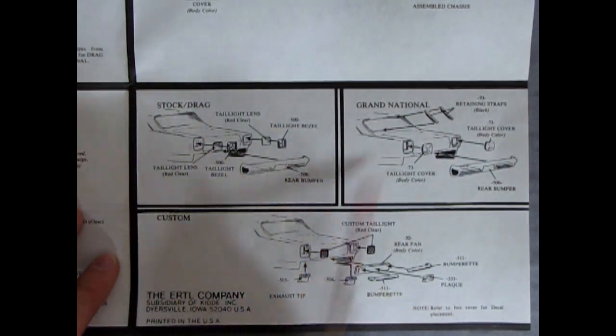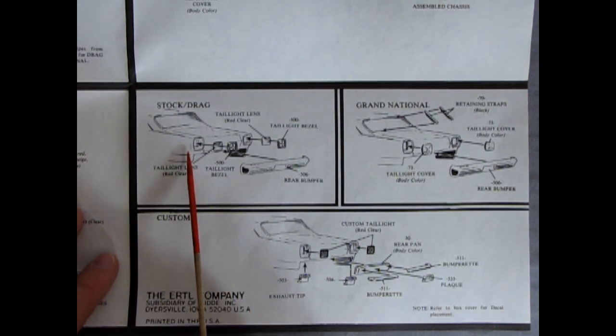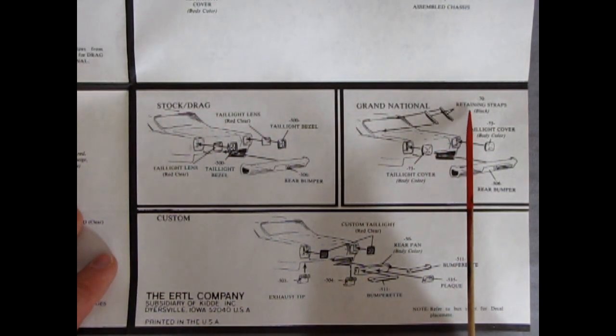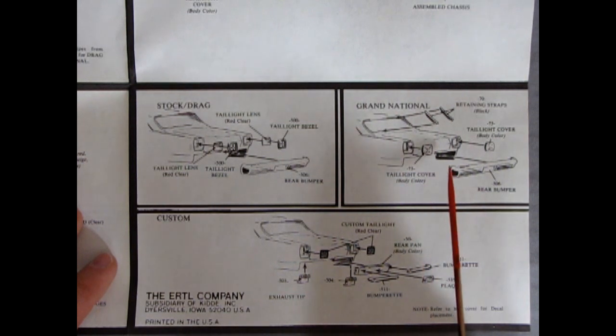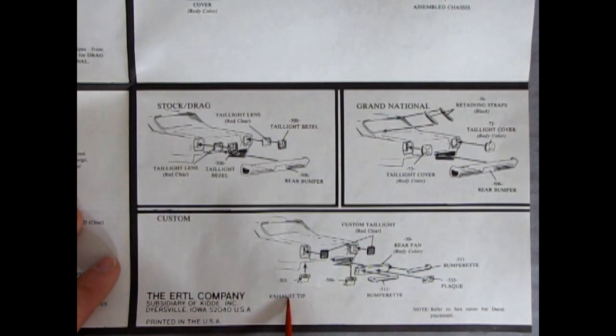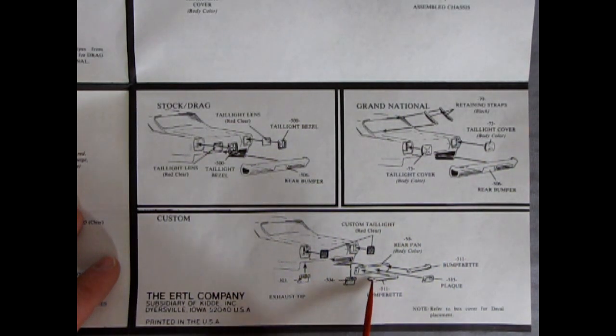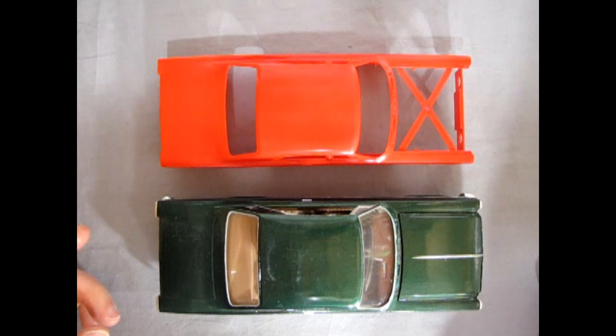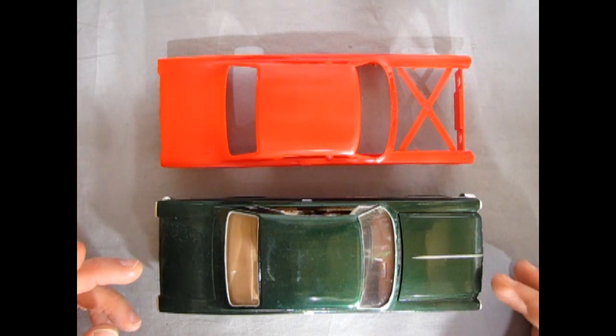And finally we get into this panel here. Which shows the stock and drag options. So this is the stock and drag taillights going in. There's a little red plastic there. And then the chrome outsides. The bezels. In the Grand National they give you the restraining straps for your windshield. And the metal covers that go over for your taillights. As well as your rear bumper. And then in the custom version you've got these cool exhaust tips, bumperettes, a rear rolled pan, a plaque, and these custom taillights which fill up the whole full square in there.